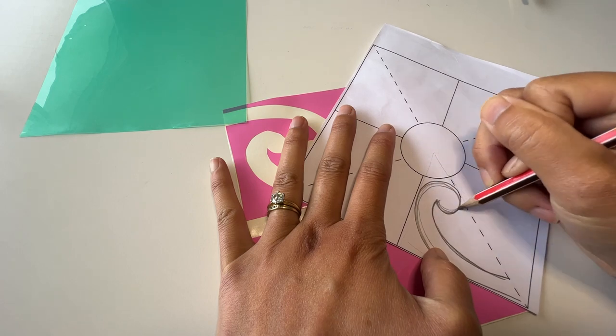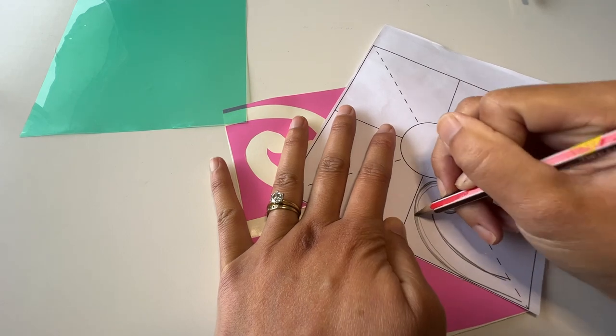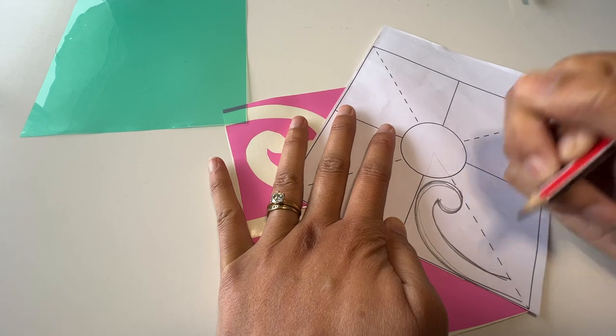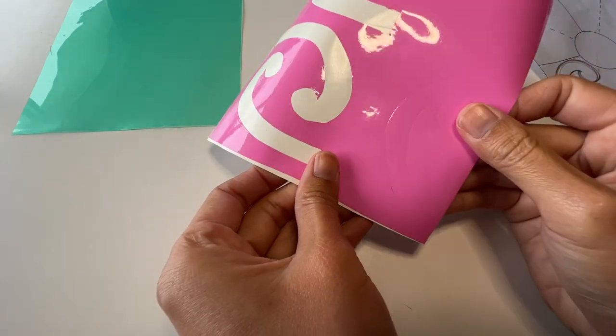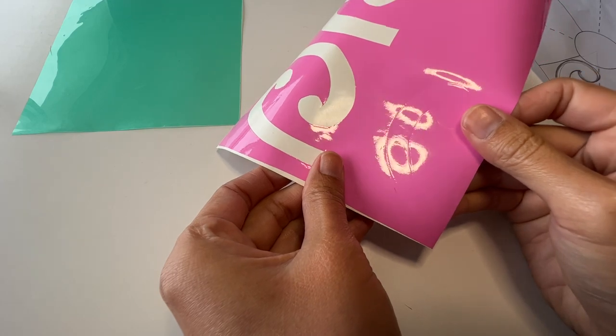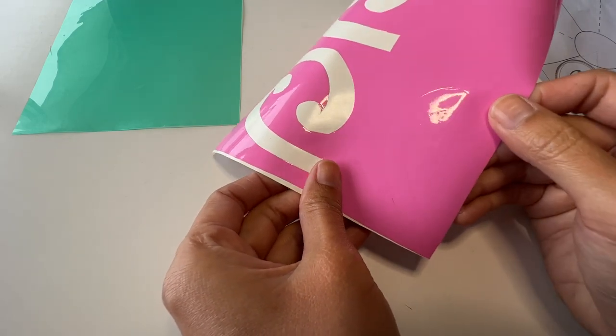And the aim here is to push hard on your pencil on the piece of vinyl and paper so you can see that there's a bit of an indent. So this will guide you as to where you need to cut.